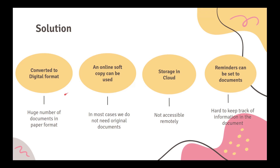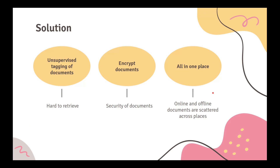The problem of paper documents can be solved by storing them in digital formats. A soft copy is more portable when compared to a hard copy. Storing the documents in the cloud will solve the problem of accessibility. All you need is a good internet connection. The sheer volume of both online and offline documents makes it harder to retrieve them. This problem can be solved by tagging the documents based on their content. The documents in the cloud will be stored after encrypting them, making it impossible to retrieve them without the user login. This will be a single point at which all documents can be stored, reducing the hassle of searching through different locations.